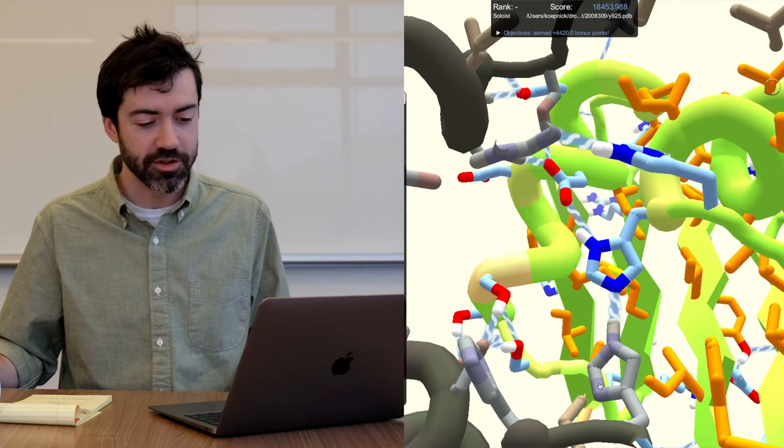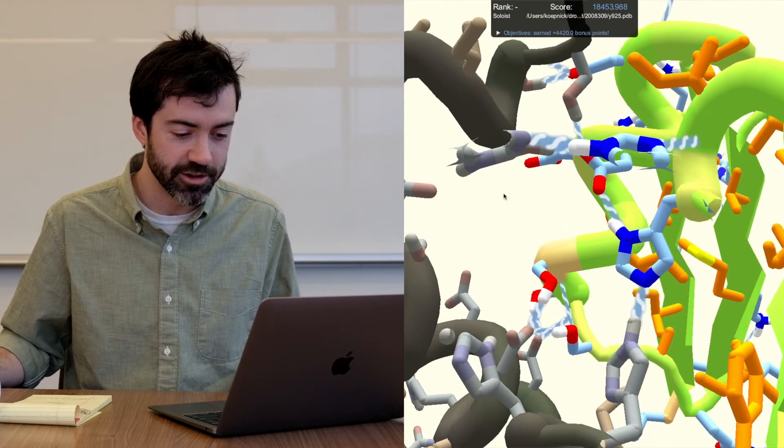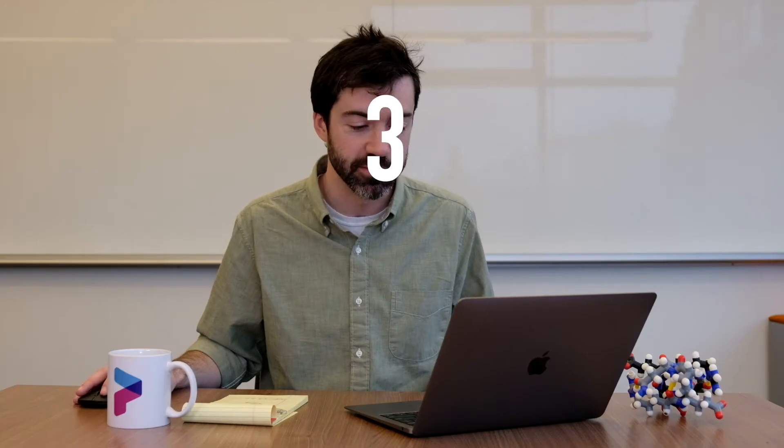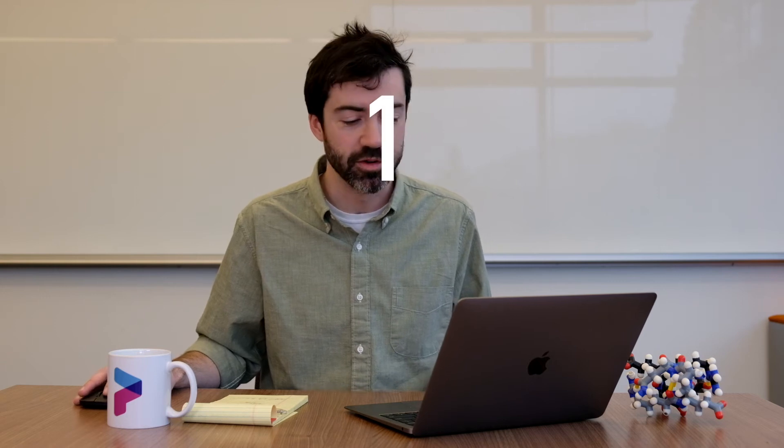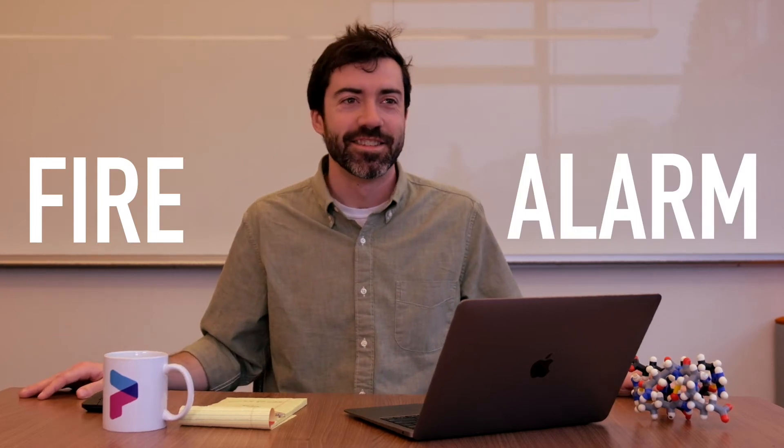Again, what we like about this network is that every polar atom here at the interior of the protein is making a hydrogen bond, which is very important. So this is a great example of a well-formed hydrogen bond network.